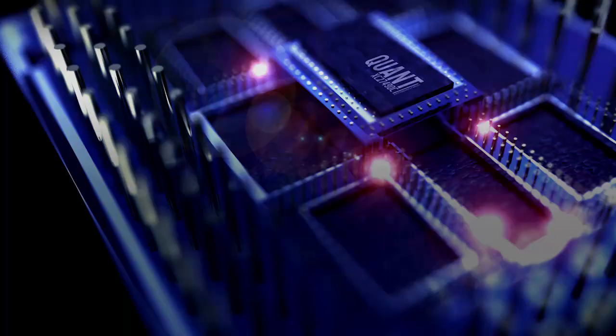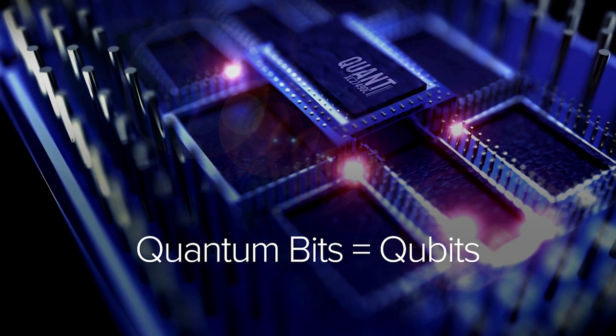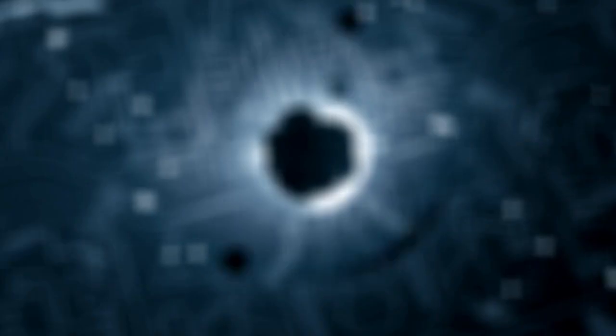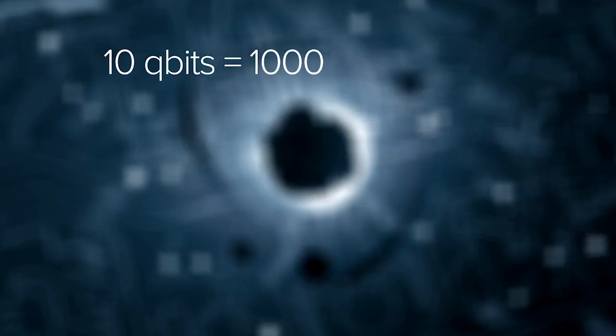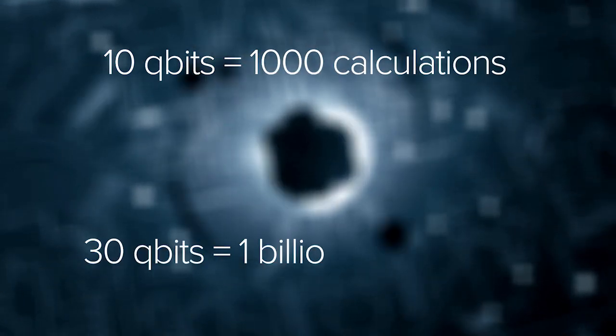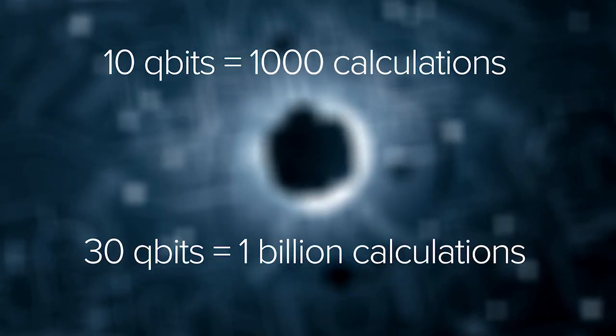In contrast, quantum computers use qubits, or quantum bits. Quantum bits can exist as both a 1 and a 0, and so they can do two calculations at once. This may not seem very impressive, but each qubit has a multiplicative effect. 10 qubits can do a thousand calculations at once, and 30 qubits can do a billion calculations at once.